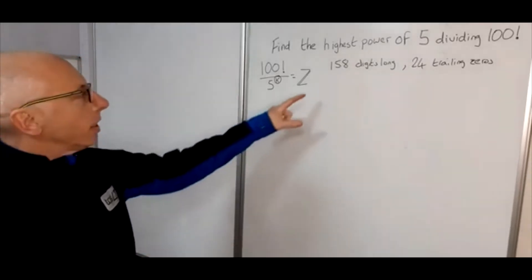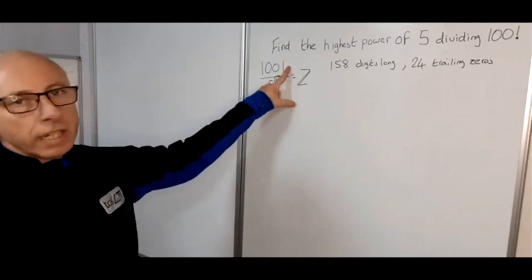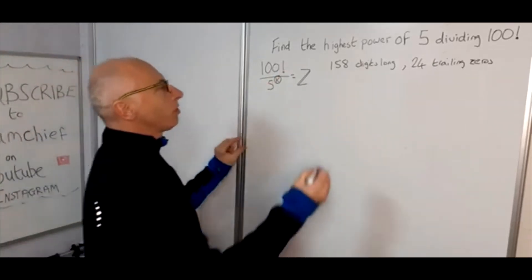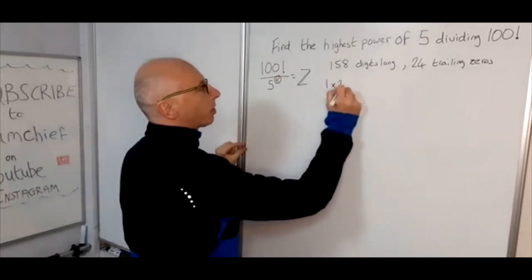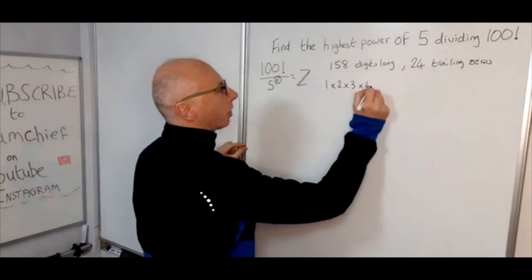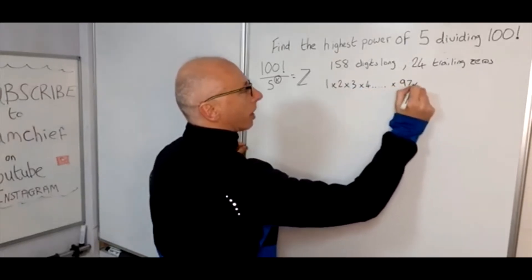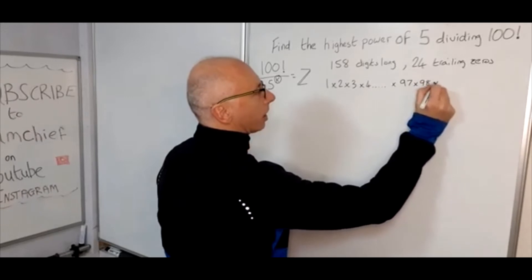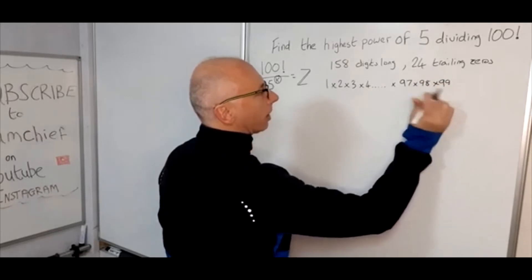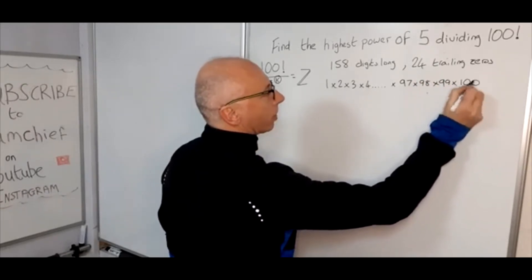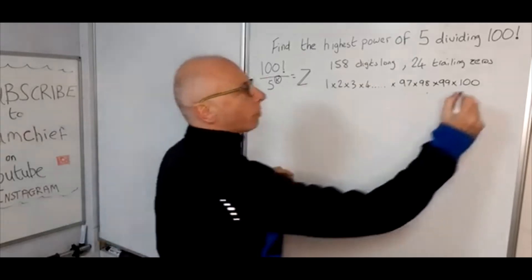So what we need to work out is what 100 factorial is for a start. 100 factorial is 1 times 2 times 3 times 4 times 97 times 98 times 99 times 100. And that's our 100 factorial.